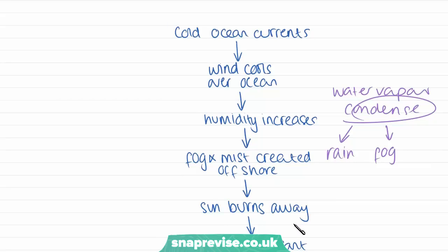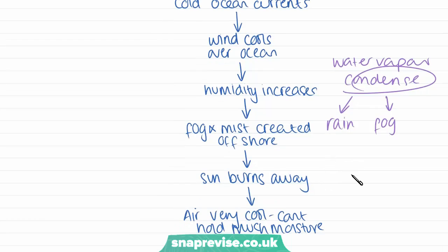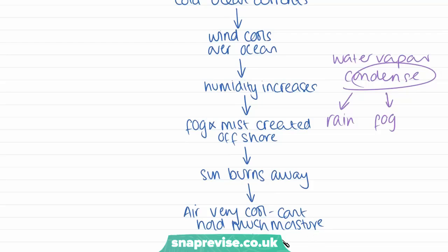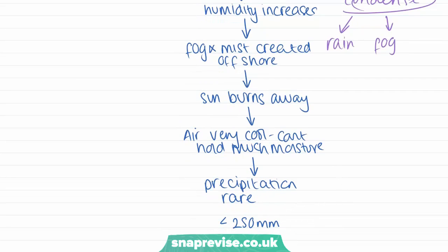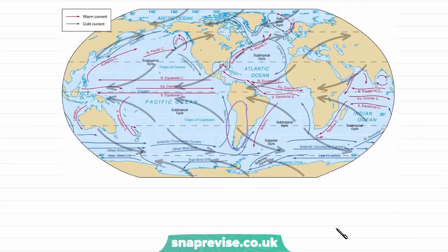When the sun comes up during the day, it burns away the offshore fog and mist. The remaining air is very cool and can't hold much moisture, so as it moves inland there is very little precipitation. All of the moisture has been lost because the air is so cold. This is why deserts near cold ocean currents receive very little precipitation — less than 250 millimetres. The cold current next to South America cools the passing wind, which arrives at the land holding no moisture, making it unable to rain over the land.